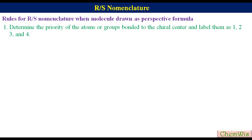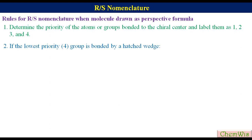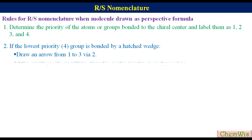If the lowest priority group, i.e. group 4, is bonded by a hatched wedge, then draw an arrow from 1 to 3 via 2. If the arrow points clockwise then the center has R configuration.